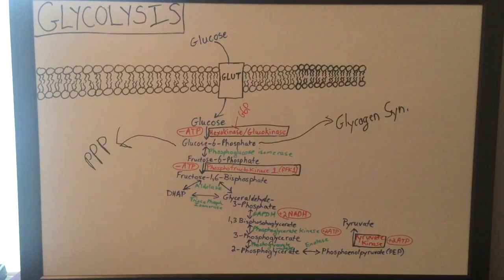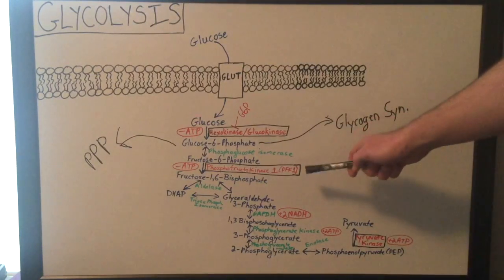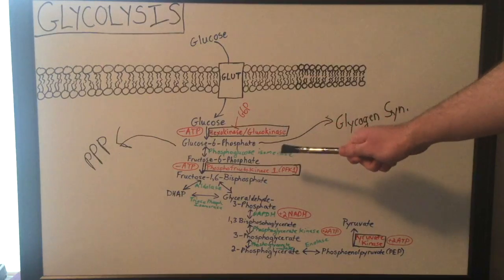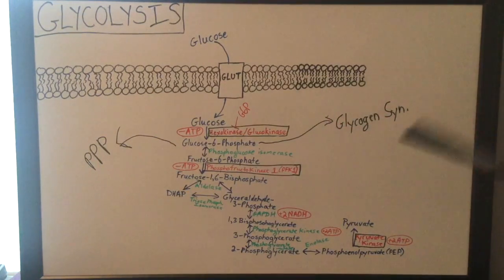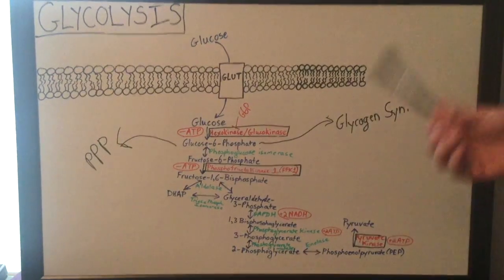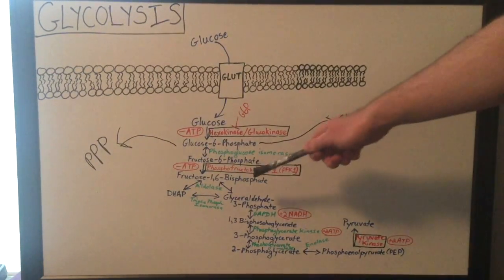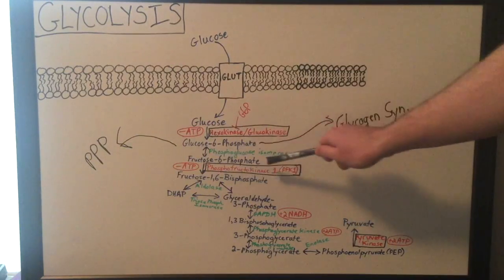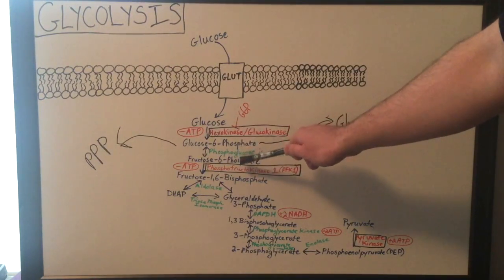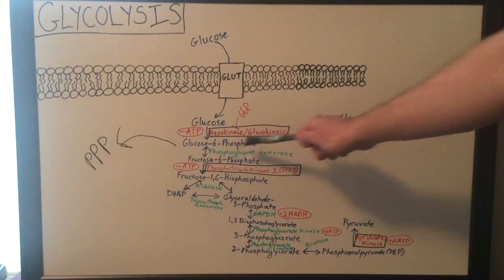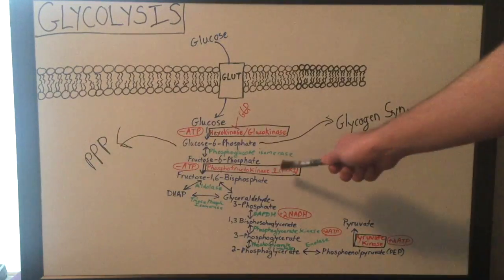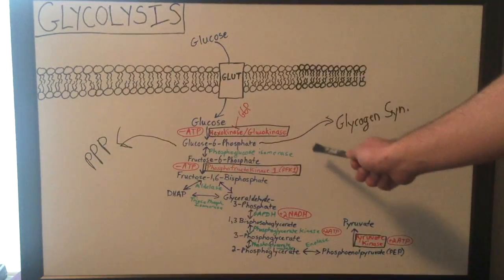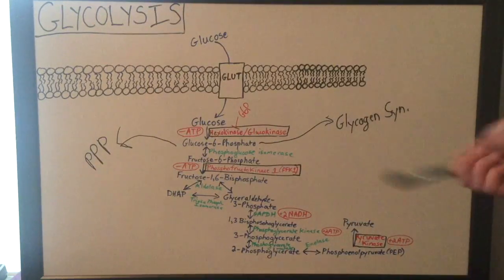This is actually a very important step in the cell. PFK1 is a really highly regulated enzyme because it is actually the first committed step in the glycolysis pathway. Because before this step, you could actually go backwards — fructose 6-phosphate could go back to glucose 6-phosphate and be diverted into the pentose phosphate pathway or glycogen synthesis. But once you get past phosphofructokinase 1, it won't go back — it'll actually have to utilize another enzyme, but we'll get into that in another video.